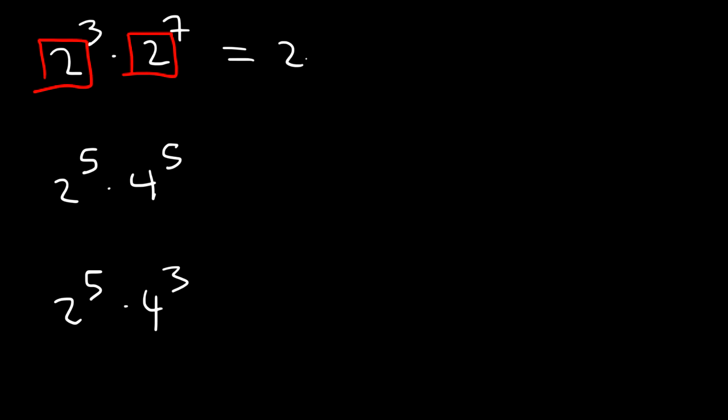Consider these three problems. What is 2 to the 3rd times 2 to the 7th? And then 2 to the 5th times 4 to the 5th, and also 2 to the 5th times 4 cubed. Now in the first example, notice that we have the same base. If you have the same base, all you need to do is simply add the exponents. So it's going to be 3 plus 7, which is 10. So the answer is 2 to the 10th.